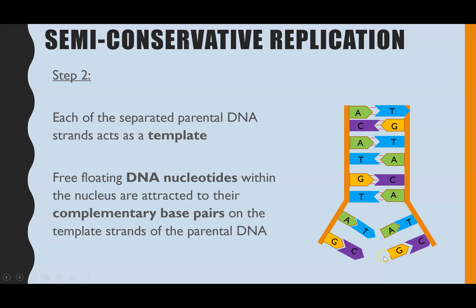Step two: once the two strands are separated, each of those strands will then act as a template. That template enables complementary DNA nucleotides, which are floating freely within the nucleus, to align opposite their complementary base pairs. This is possible because of the complementary base pairing rule. The nucleotides aren't joined together yet to make a polymer — they're still monomers. We haven't yet made that polynucleotide chain to form our new DNA polymer.